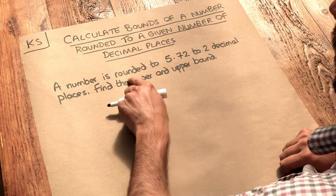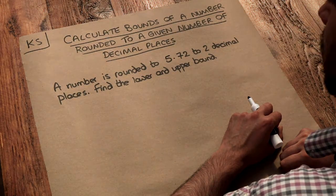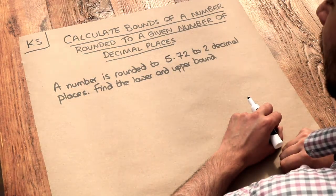We've got this problem here. A number is rounded to 5.72 to two decimal places. Find the lower and upper bound.